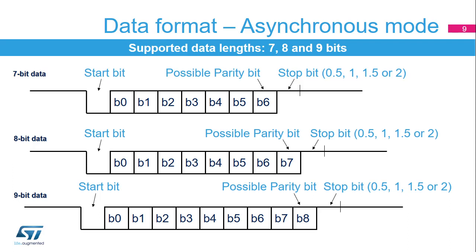The frame format used in asynchronous mode consists of a set of data bits in addition to bits for synchronization and optionally a parity bit for error checking. The USART supports 7, 8, or 9 bit data lengths. A frame starts with one start bit where the line is driven low for a 1-bit period, used for synchronization. The start bit is followed by 7, 8, or 9 data bits. If parity control is enabled, the parity bit is transmitted as the last data bit and is included in the data length count. Finally, a number of stop bits — settable to 0, 1, 1.5, or 2 — where the line is driven high, ends the frame. Data order is programmable with most significant bit first or least significant bit first shifting.